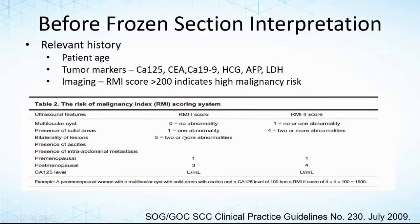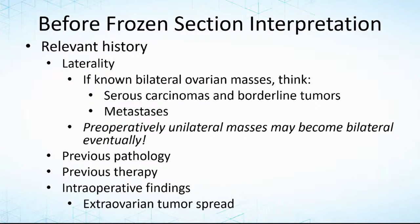Generally, an RMI score over 200 indicates a high risk of malignancy. Other relevant history is tumor laterality. If we know going in that the patient has bilateral ovarian masses, we're going to think for primary ovarian tumors about serous carcinomas and borderline tumors most commonly. And of course, we're always going to consider the possibility of metastasis. Just remember that preoperatively, masses that are unilateral may become bilateral eventually, so don't let yourself be overly biased by the information of unilaterality. We want to know if there's any previous pathology, history of previous therapy, and if there are any intraoperative findings — the surgeon should communicate this to you.